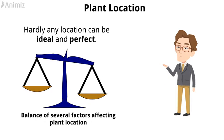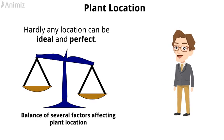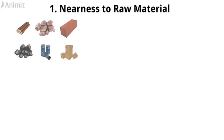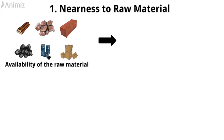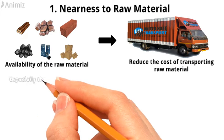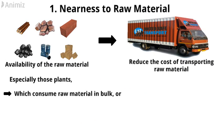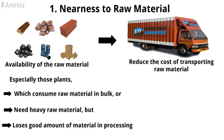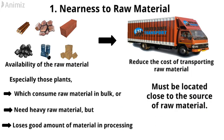Now we will discuss each factor separately. Factor number 1: Nearness to raw material. Availability of the raw material near the plant will reduce the cost of transporting raw material from the vendor's end to the plant. Especially those plants which consume raw material in bulk, or need heavy raw material, but lose a good amount of material in processing must be located close to the source of raw material.